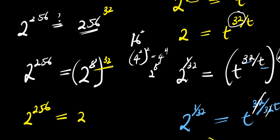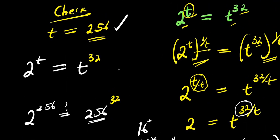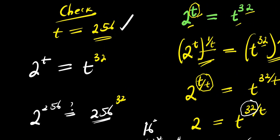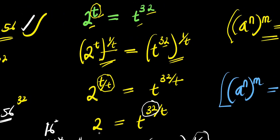Equals 2 to the power of 8 times 32, which is 256. So we have 2 to the power of 256 on both sides — they are the same. So that means the answer, which is t equals 256, is obviously very correct. So ladies and gentlemen, that is it. Don't forget to subscribe, thank you and goodbye.